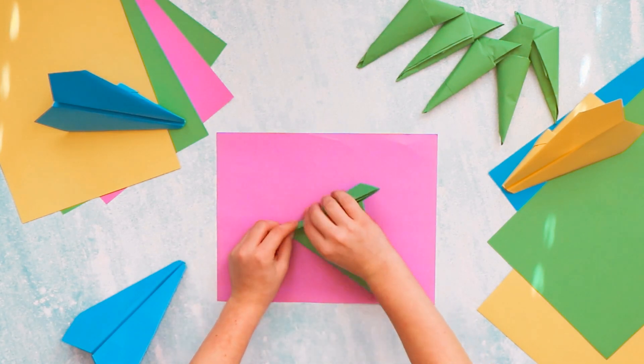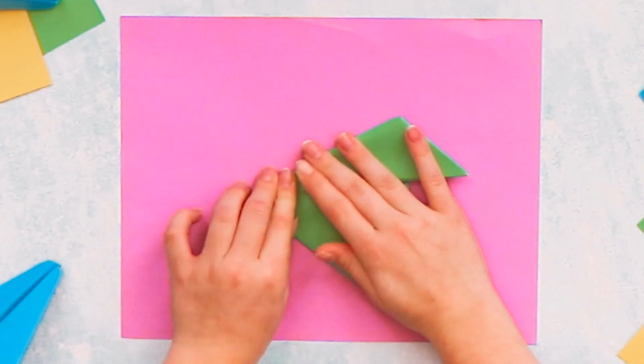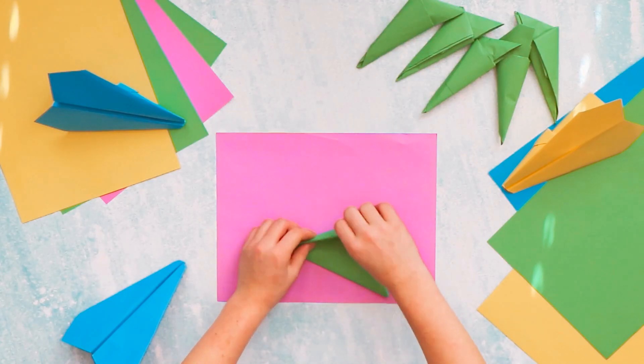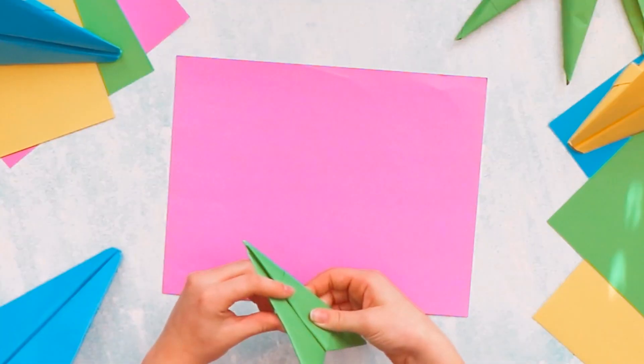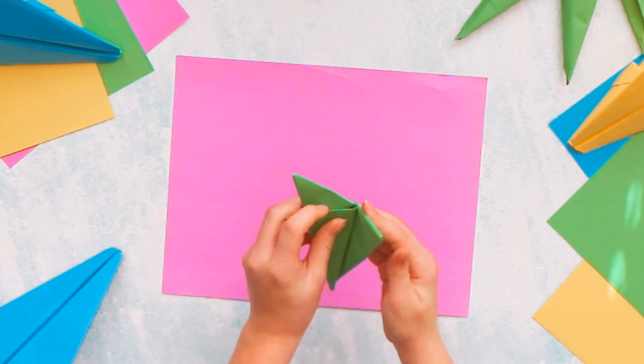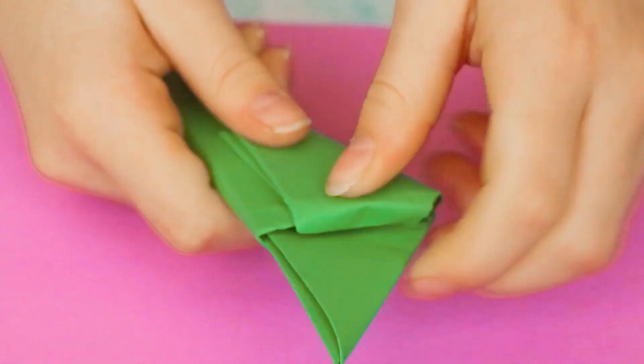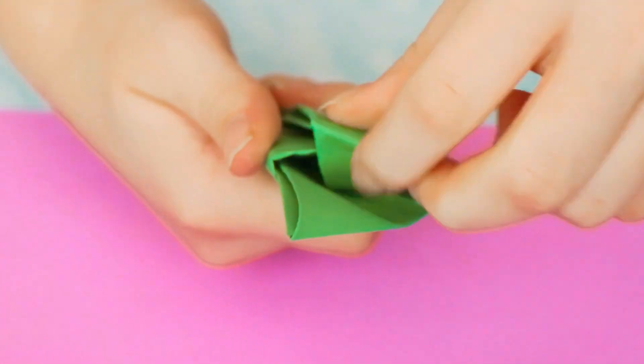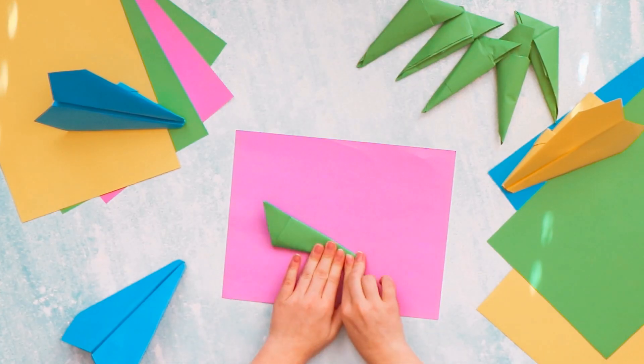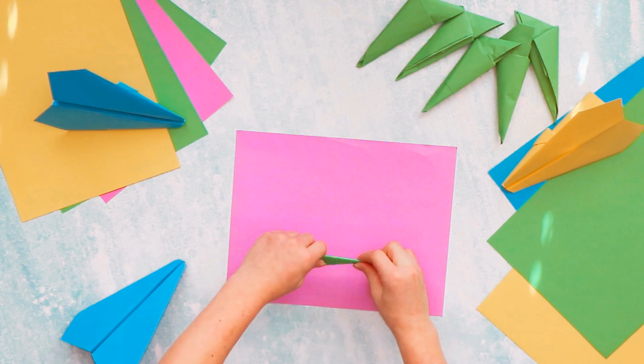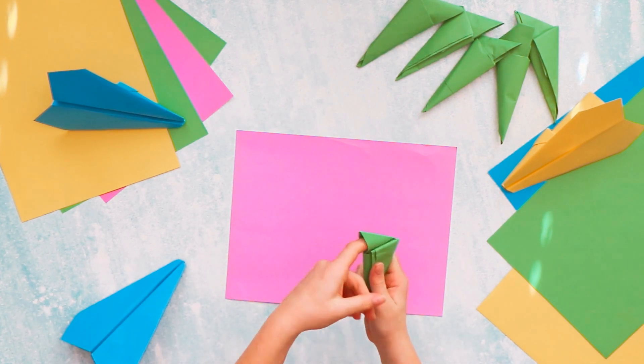Then fold it to that crease line. This part is where you want it to be nice and pointy, and fold it again. And then this part, when you pull it in, you want to open this part up and then you just crease everything up and then put your finger through this hole right here.